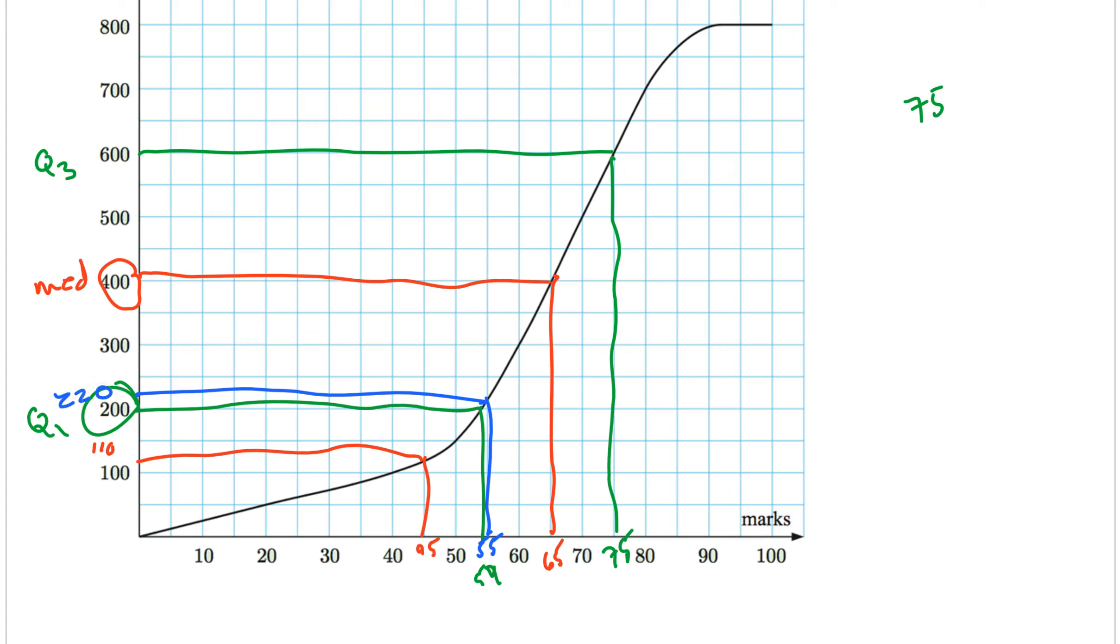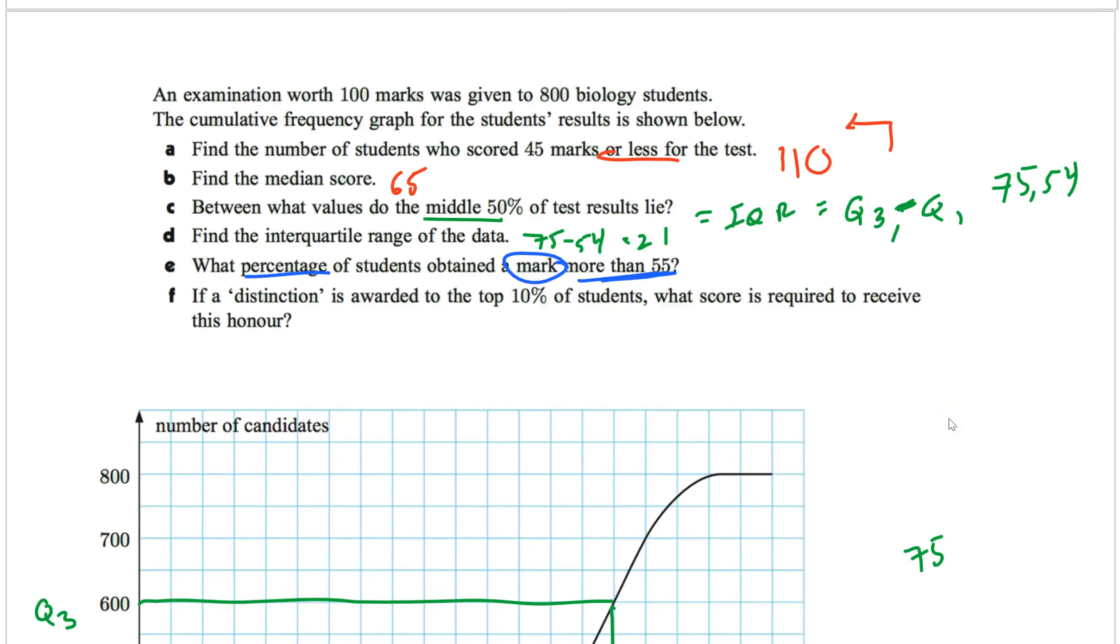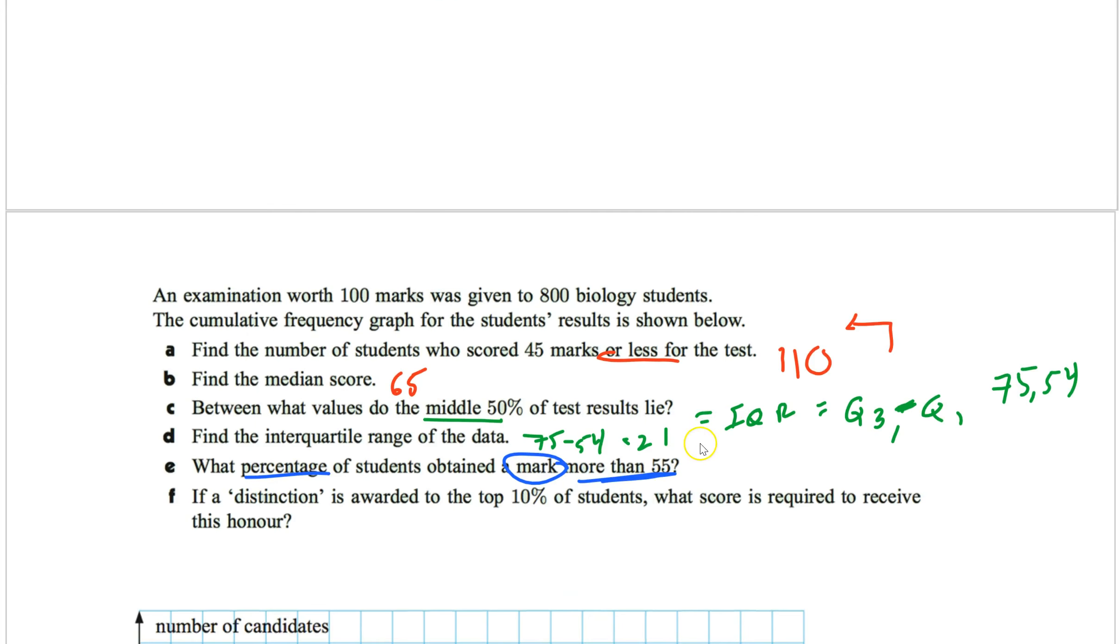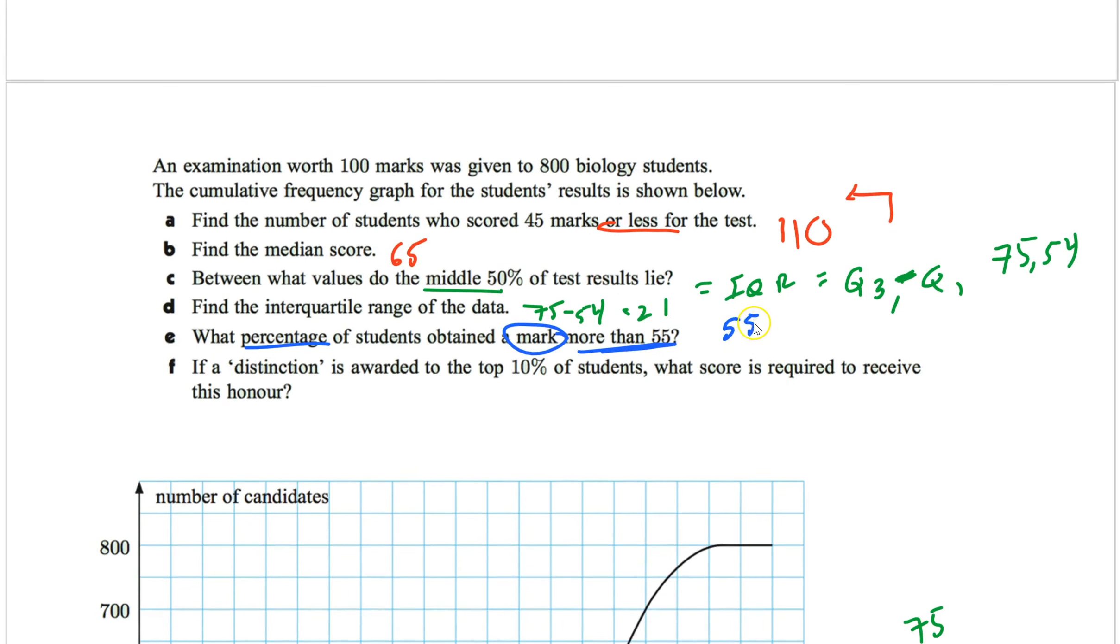Now again, it said more than. So we've got to go from the top. It said more than. So let's go from the top. So 800 minus 220. So about 580. Again, that's actually not my answer. That's how many students scored more than 55. The question said what percentage. So it's like saying percentile. So you go 580 divided by 800. And whatever that turned out to be, that's the percentile.